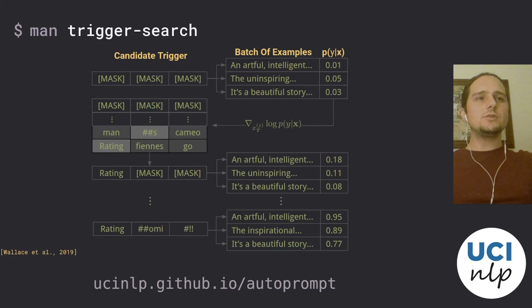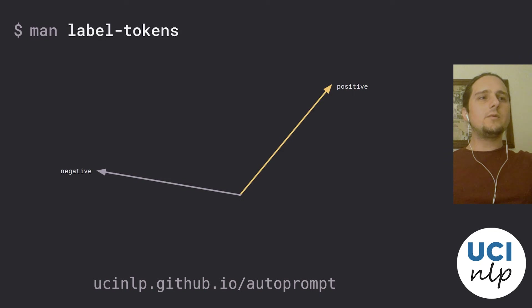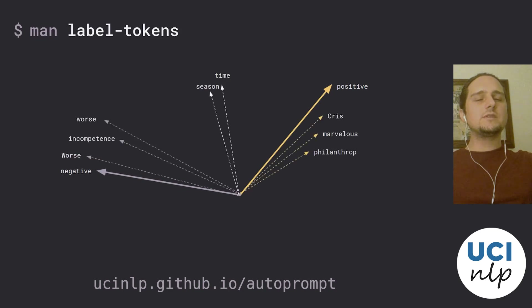In addition to the trigger search procedure, we also include a procedure to automatically determine a set of label tokens in cases where it is not obvious. For instance, for the sentiment analysis class, it might not be the case that 'positive' and 'negative' are the best labels to look at for the language model probabilities. In order to obtain a better set of words, we begin by training a linear classifier on top of the masked token representation from the language model. This produces a vector representation for every label in the classification task. We can then identify candidate words to use as label tokens by finding the words whose vector representations in the output layer of the language model are closest to the learned representations of these labels.